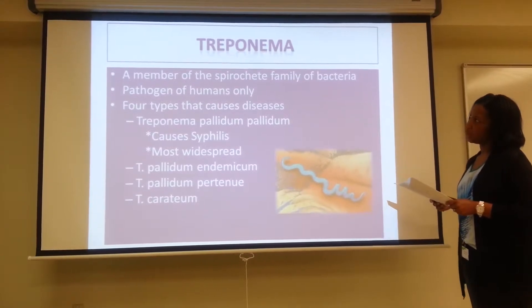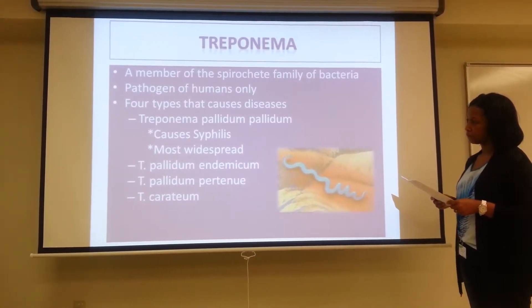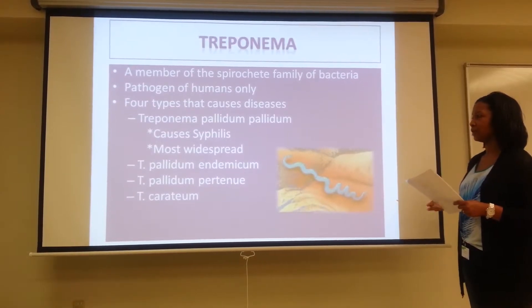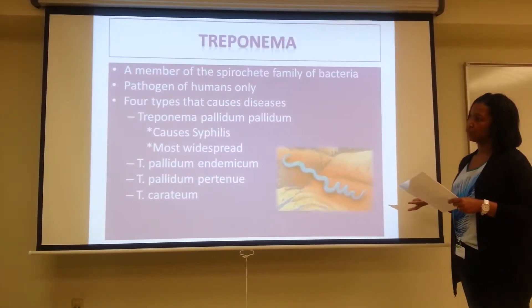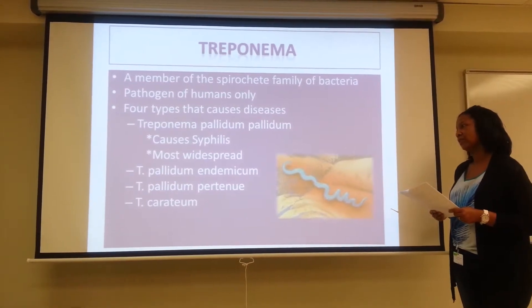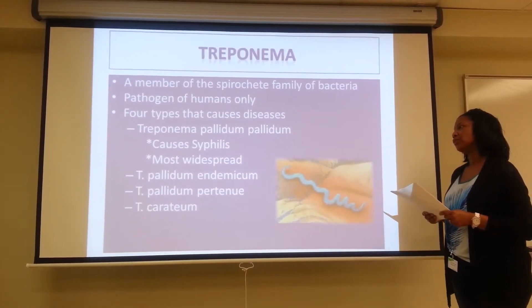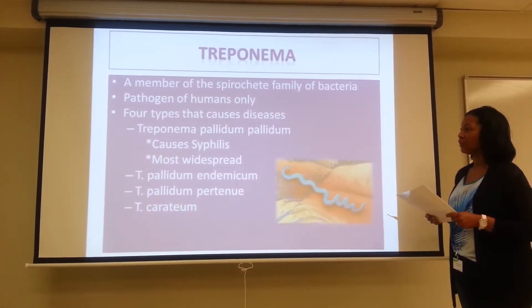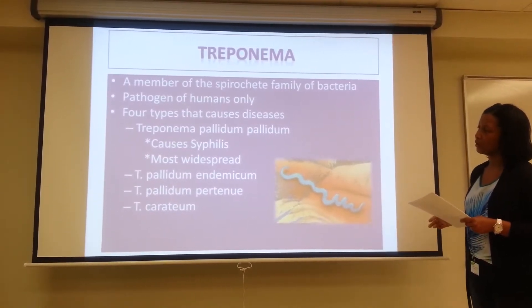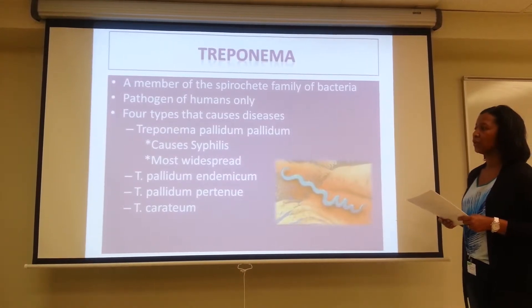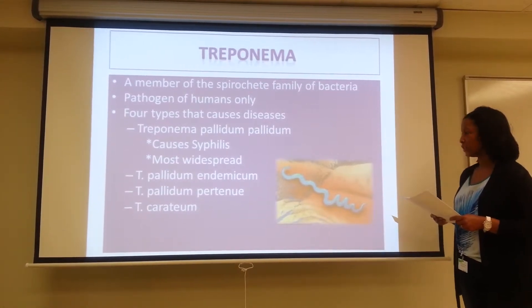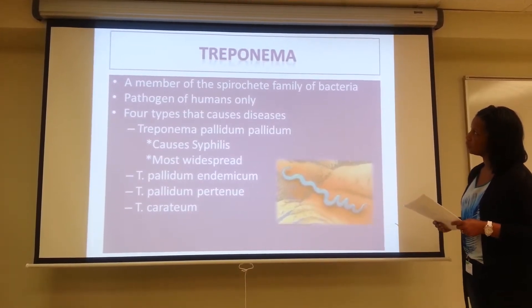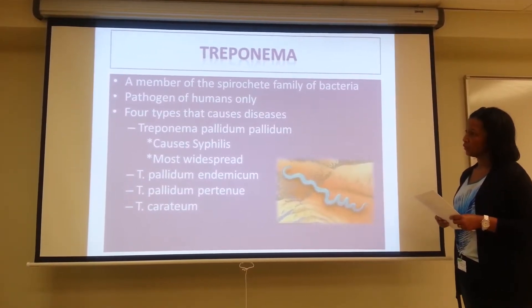There are three other types of Treponema: Treponema pallidum endomycin, which can be abbreviated T. pallidum endomycin; T. pallidum pertenue; and T. carateum. These three types are non-sexually transmitted — they are not transmitted through sexual contact. In the corner we have a picture of the little spiral-shaped spirochete of Treponema.